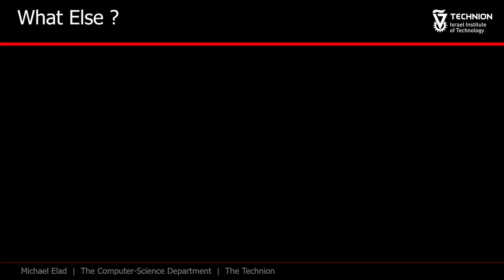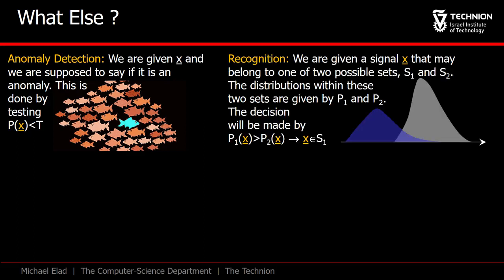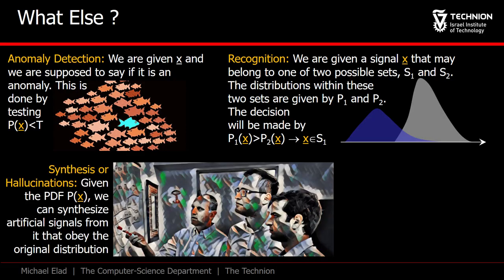So we have seen that P of x plays an important role in denoising, and more broadly in all the inverse problems, in compression, sampling, and separation. What else? In fact, P of x has many other uses, such as detection of anomalies in images, in recognition, where we aim to assign a label to a given image, in synthesis of images, where we are to draw at random an image from its probability density function, and more.